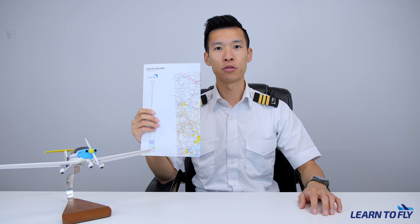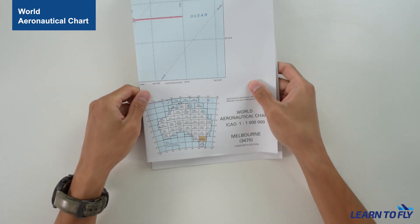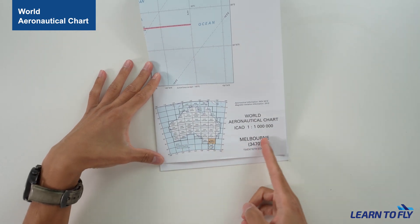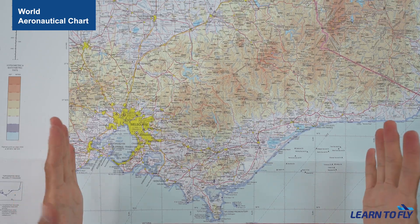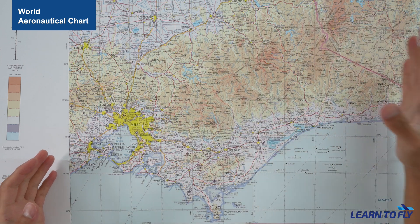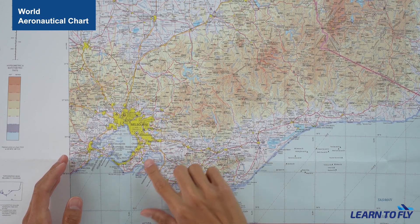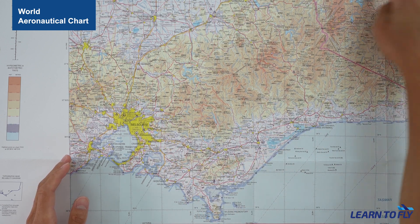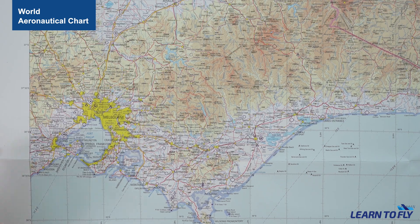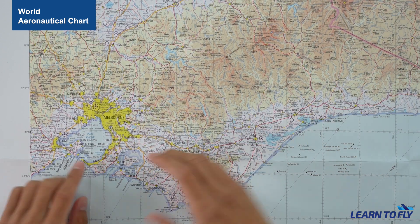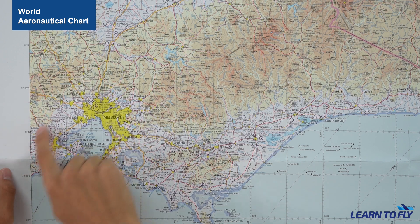WAC — the World Aeronautical Charts — has a smaller scale compared to the previous two charts, which allows it to cover the most distance and area with less definition. If you put all the WACs together, you'll be able to cover the entire continent of Australia. Whenever we are flying outside of the VTC and VNC coverage area, we'll need to use the WAC to navigate. After opening up the WAC chart, you can see how much area and terrain it covers — it has a great ability to visualize terrain. You can see the Great Dividing Range painted in different shades of brown to indicate terrain height. The darker brown shows higher ground, and the lighter brown or blue shows shallower terrain closer to sea level. The northeast of Melbourne has heaps of high terrain, while Melbourne itself appears more like a basin, portrayed in white.